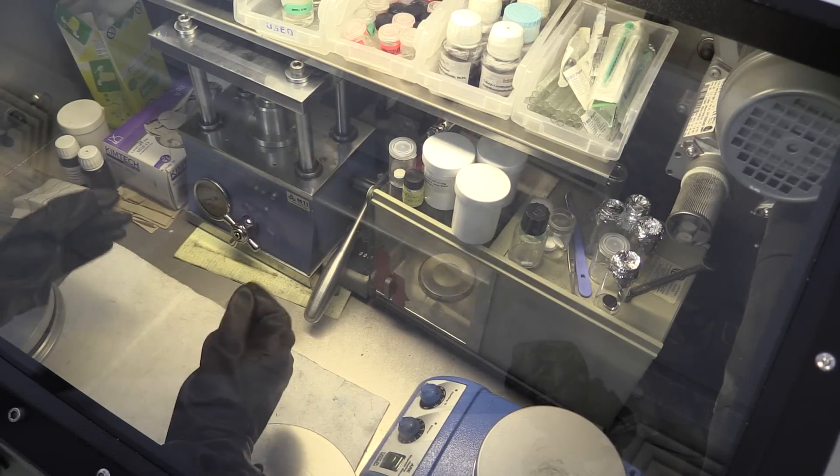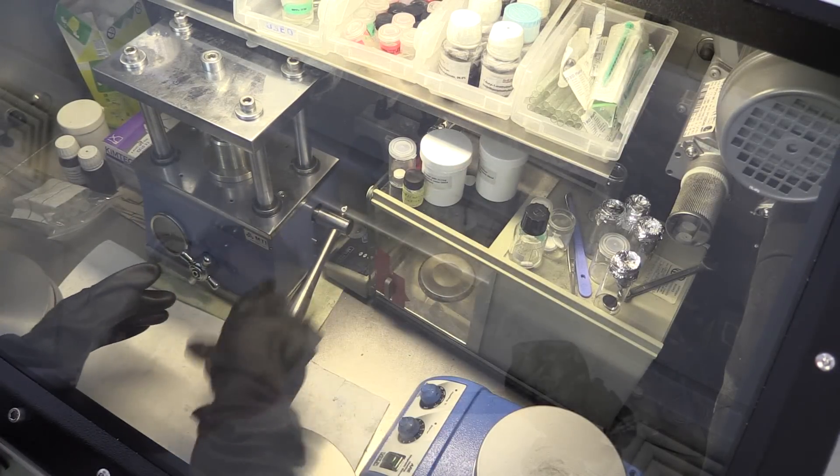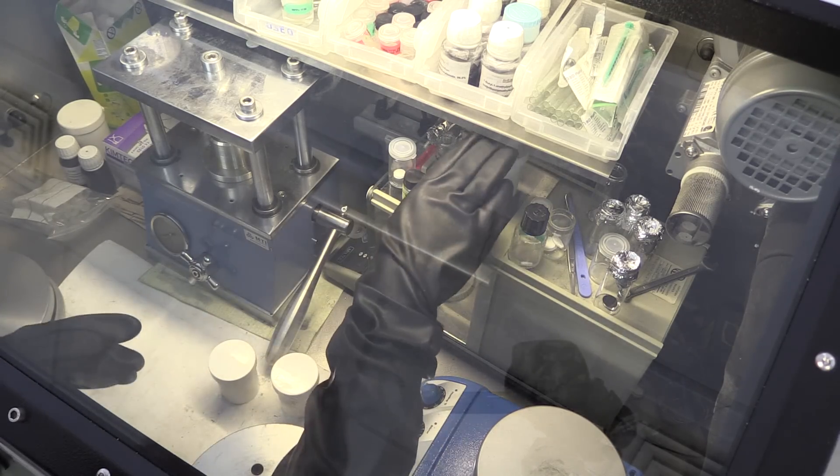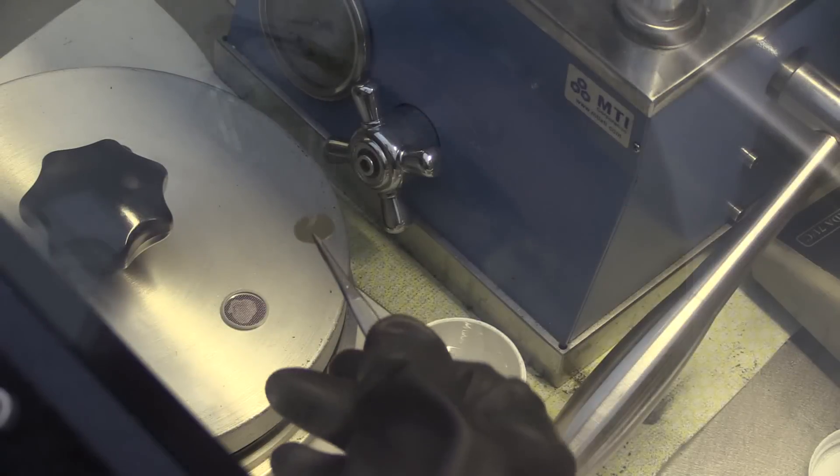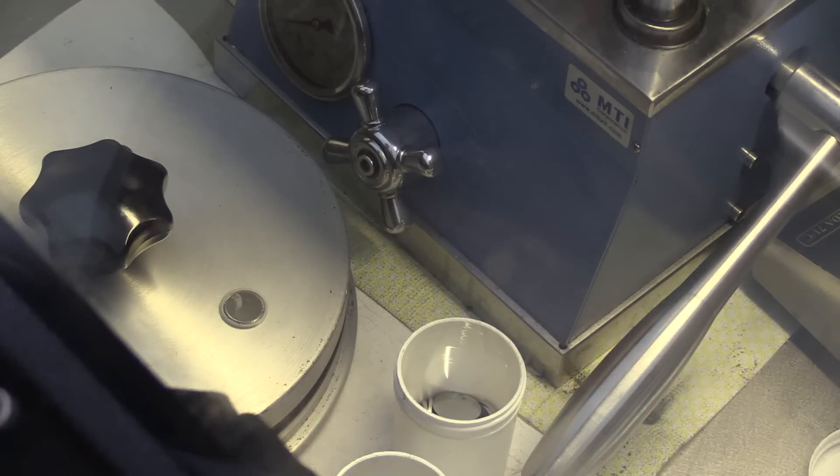After the production of all the various components, it's now time to assemble them together. To do this, it's important to use an argon filled glove box to protect the electrolyte and other components from moisture contamination. Firstly, we place a steel spacer in one half of the coin cell casing to help protect the electrode and aid compression of the components.